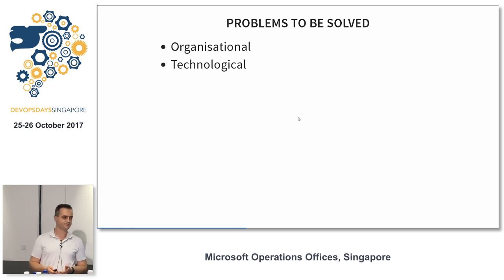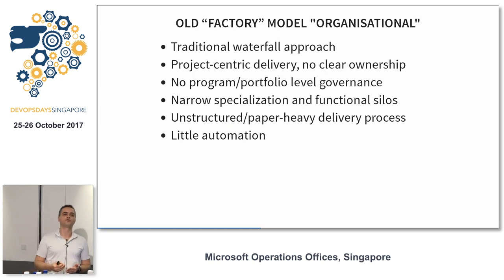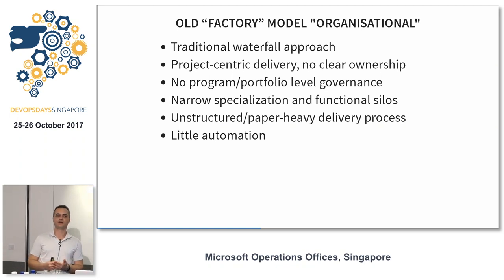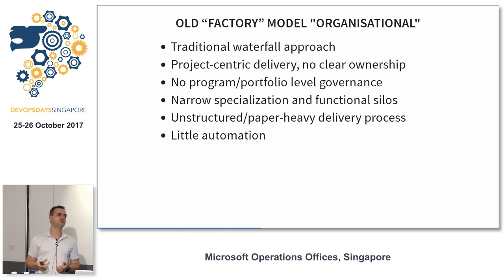When we arrived, we saw several problems with the teams. It was a classical traditional waterfall model approach to development — project-centric delivery with no clear ownership. No problem or portfolio governance level. Everything was kept in Excel files — all the services and what was published — and sometimes you had multiple versions, which was pretty messy. There was also narrow specialization: separate teams for infrastructure and development, aligned by domain. Every single delivery took around two to four weeks — even for a one-line code change, you'd need to wait three weeks to deploy to production, just because of paper-heavy deployment.